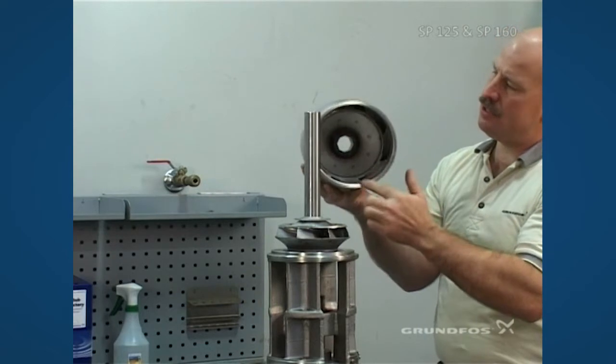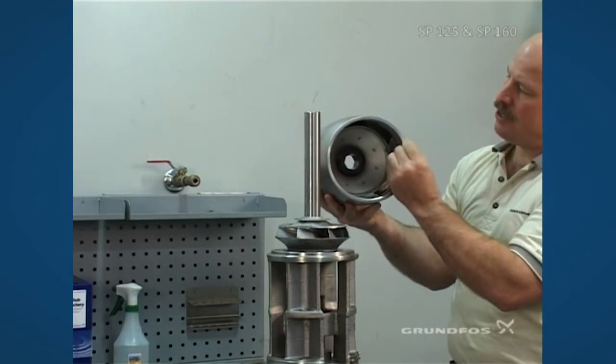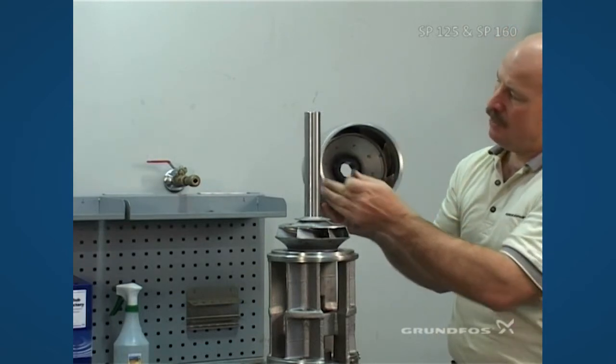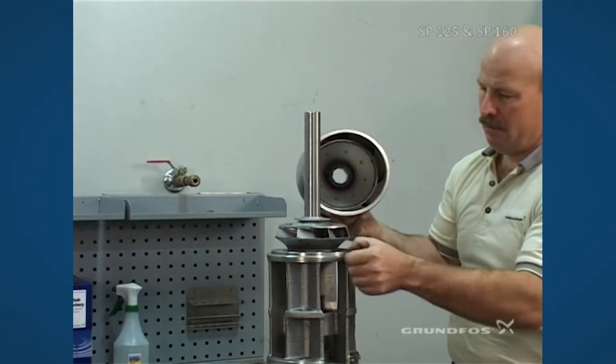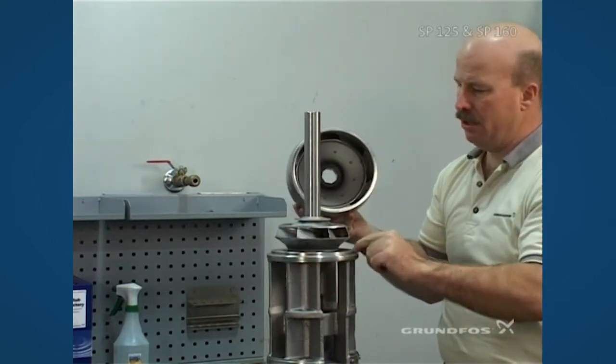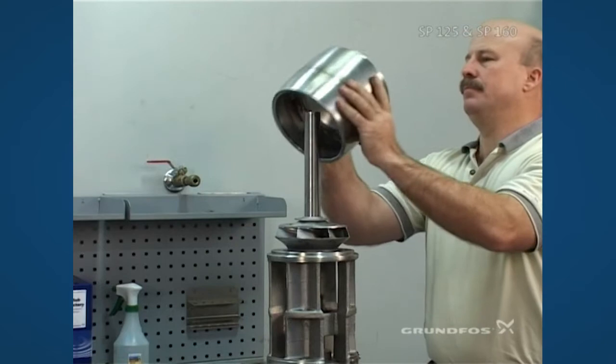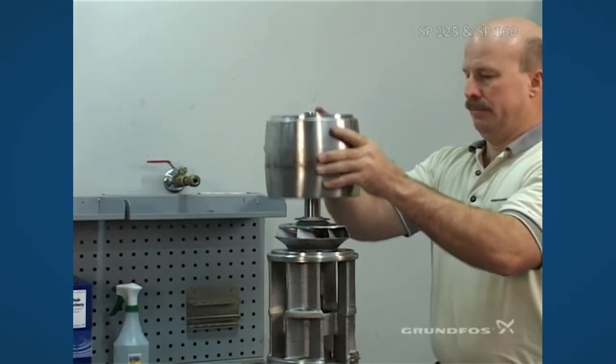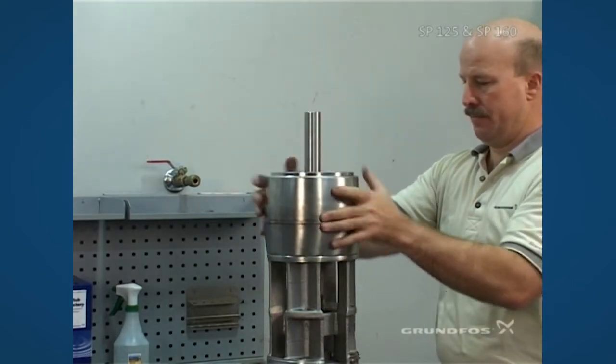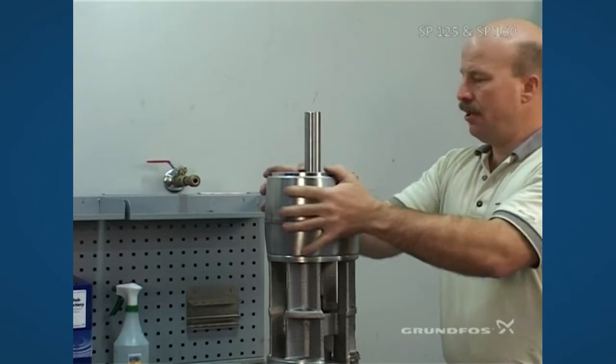Now we can add the chamber. We're checking the seating surfaces, making sure that there's nothing on them that would prevent them from seating properly. Make sure that the mating surface here is also clean. Make sure it's seated all the way down.